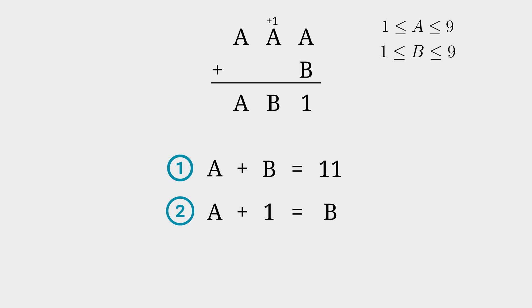The B is isolated in the second equation, so we can directly substitute B into the first equation. This will give us A plus A plus 1 is equal to 11.